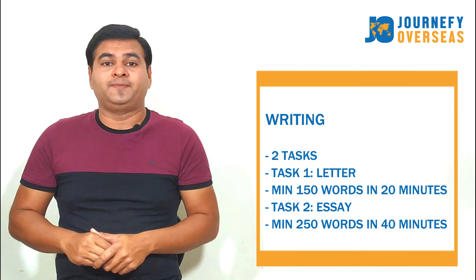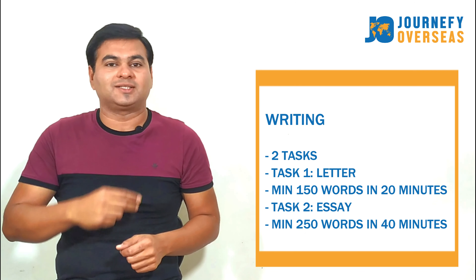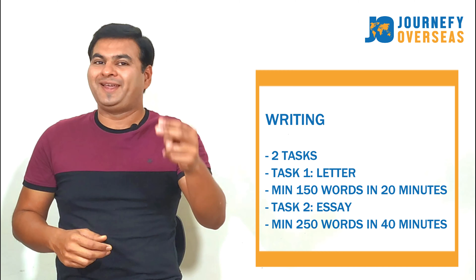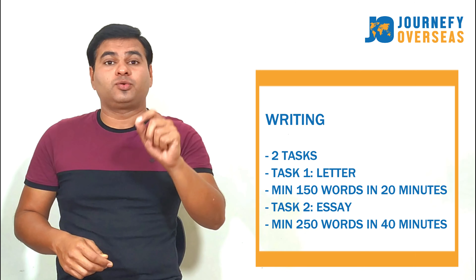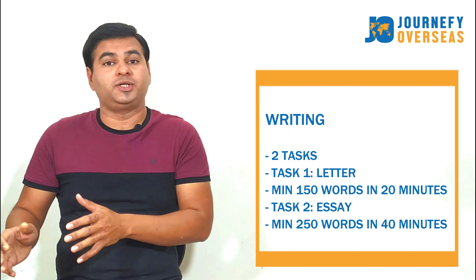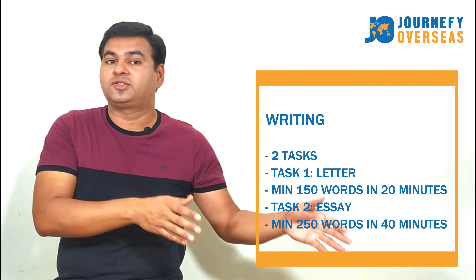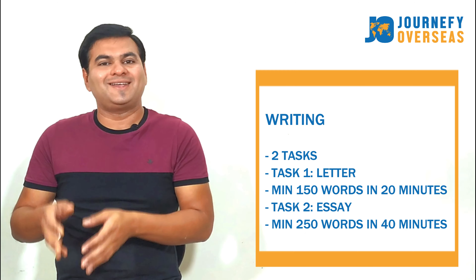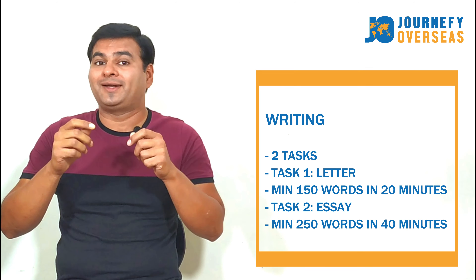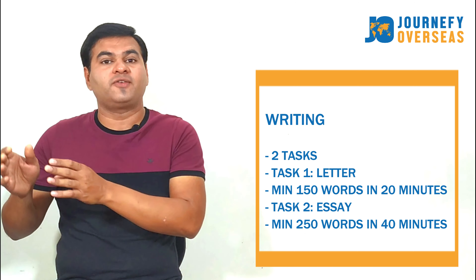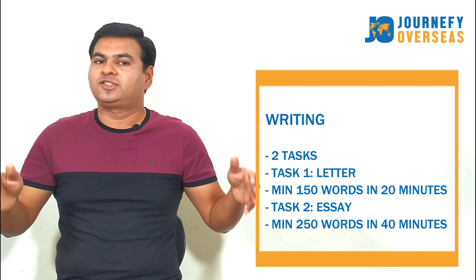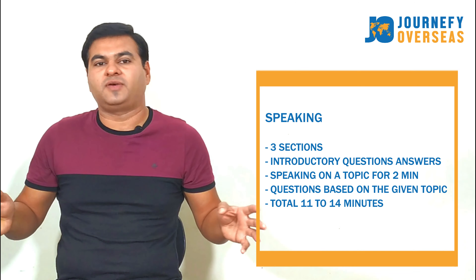The next section is writing. In writing, there will be two tasks. Task 1 will be a letter and Task 2 will be an essay. In Task 1, you will be given a topic on which you need to write a letter of minimum 150 words, and you will get 20 minutes for this. In Task 2, you will be given a topic on which you need to write an essay of 250 words, and you will get 40 minutes. So in total, you will get 60 minutes for writing. The last section is speaking, which could be on the same day or on some other day within the span of 7 days.